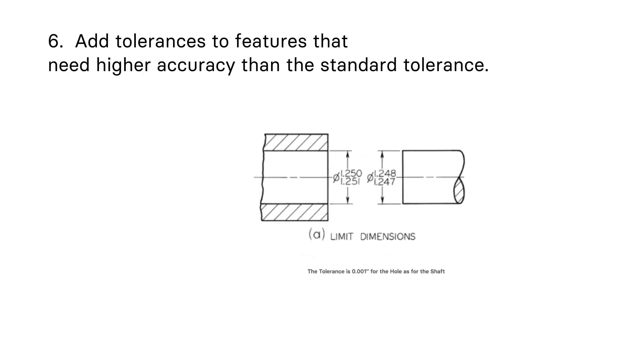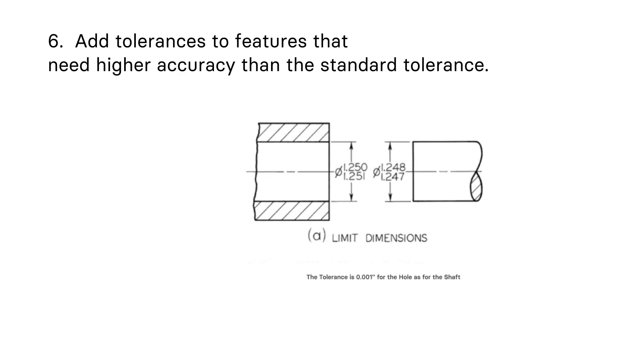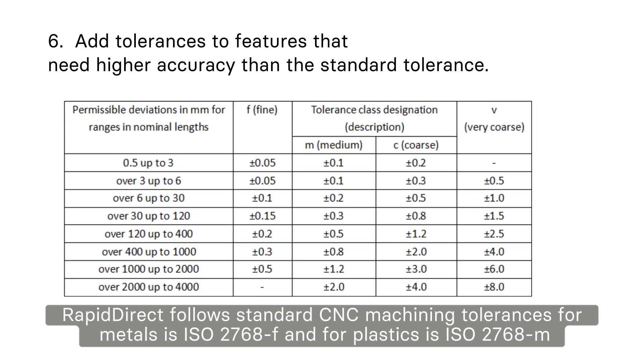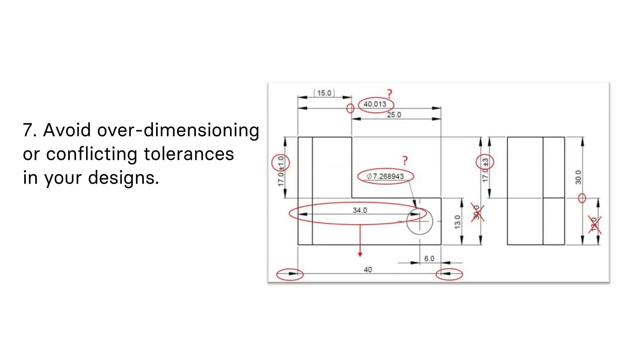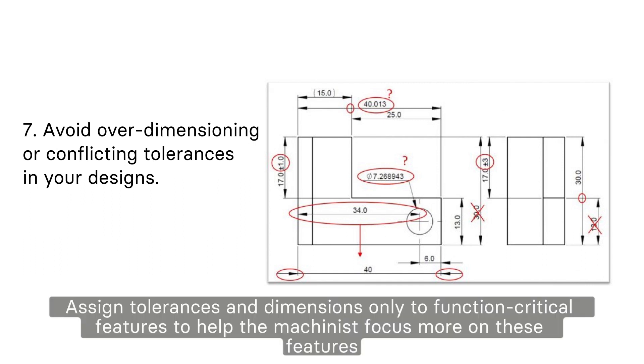Tip number six, add tolerances to features that need higher accuracy than the standard tolerance. Rapid Direct follows standard CNC machining tolerances for metals is ISO 2768-F, and for plastics is ISO 2768-EM. Tip number seven, avoid over-dimensioning or conflicting tolerances in your designs. Assign tolerances and dimensions only to function-critical features to help the machinist focus more on these features.